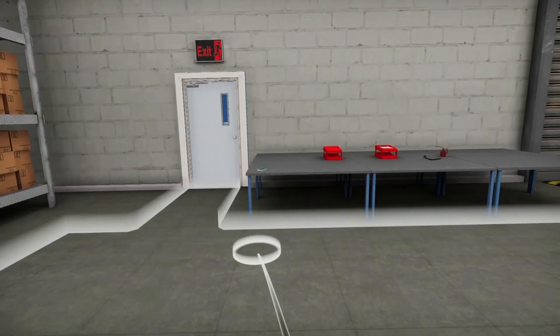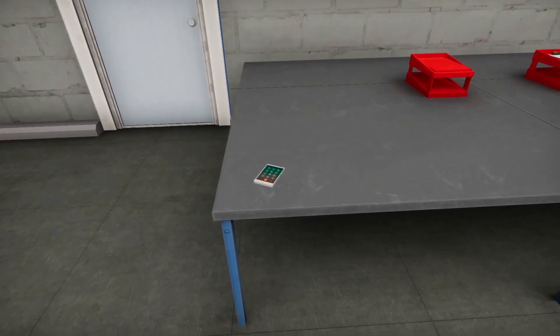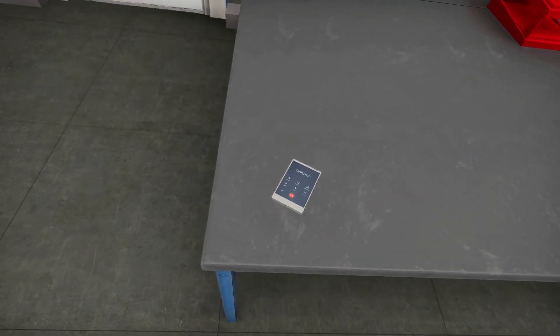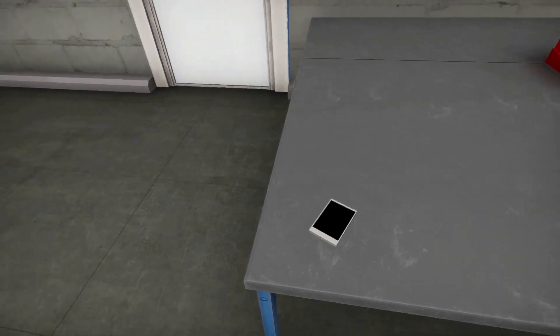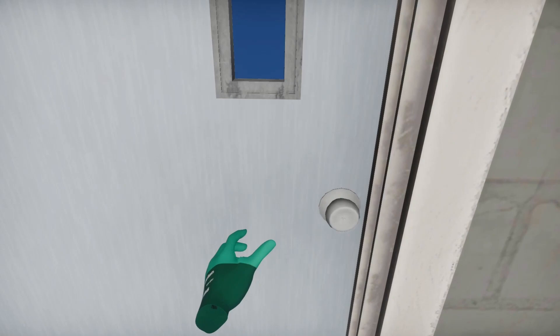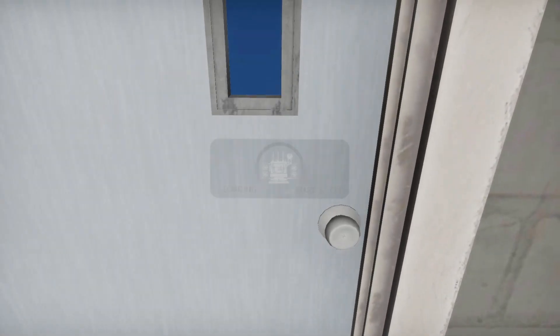Before entering any substation, you must call the appropriate control center. Proceed out the door to begin the next part of training. You can skip this portion of the tutorial next time by going straight out the door.